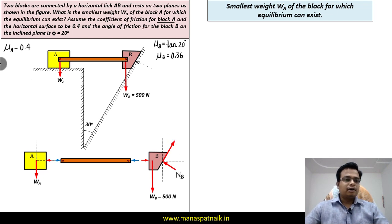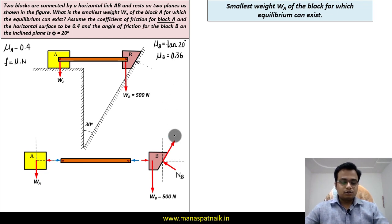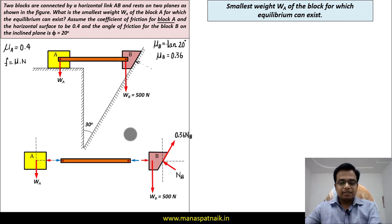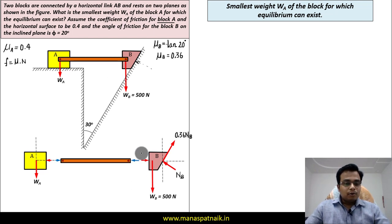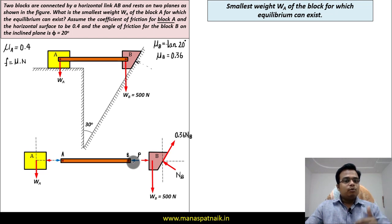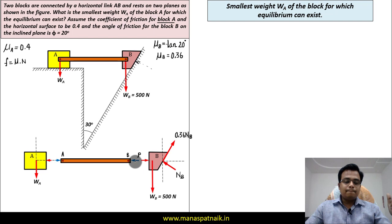The frictional force equals mu times the normal force. The normal for block B is N_B, so the friction force is 0.36 × N_B. Since block B has a tendency to move down the plane, it exerts a force P onto link AB in the left-hand direction (blue arrow). By Newton's third law, link AB applies an equal and opposite force P back onto block B in the right-hand direction (red arrow) — a classic action-reaction case.